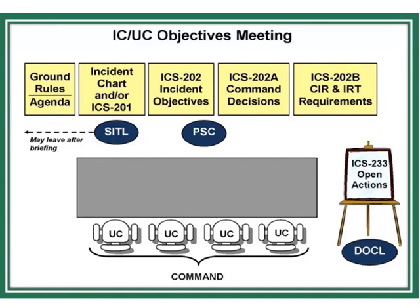Here's the meeting layout for the objectives meeting. If your situation is constantly changing, it's a good idea to have the Situation Unit Leader come in and provide a quick briefing or update to the Unified Commanders. You can see four incident commanders from four different agencies sitting at one side of the table, the Planning Section Chief facilitating, and the Documentation Unit Leader helping document the meeting. There are agendas available from the Coast Guard, Fire Service, and FEMA — you can find agendas for all these meetings just about anywhere.